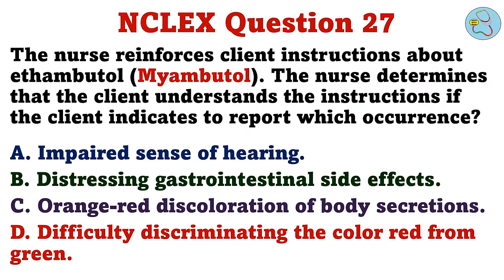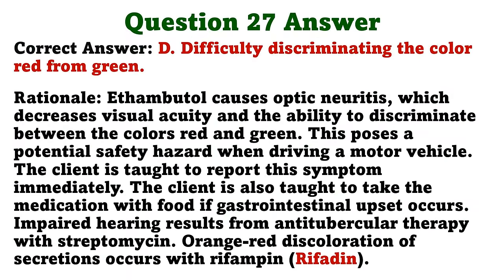The nurse reinforces client instructions about ethambutol. The nurse determines that the client understands the instructions if the client indicates to report which occurrence? A. Impaired sense of hearing. B. Distressing gastrointestinal side effects. C. Orange-red discoloration of body secretions. D. Difficulty discriminating the color red from green. The correct answer is D: difficulty discriminating the color red from green. Ethambutol causes optic neuritis, which decreases visual acuity and the ability to discriminate between the colors red and green. This poses a potential safety hazard when driving a motor vehicle. The client is taught to report this symptom immediately. The client is also taught to take the medication with food if gastrointestinal upset occurs. Impaired hearing results from antitubercular therapy with streptomycin. Orange-red discoloration of secretions occurs with rifampin.